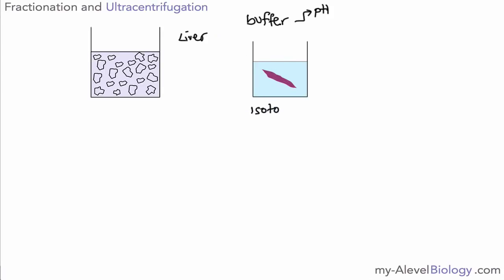But we also need to make sure that this is isotonic. Isotonic actually means that the concentration of the solution here is exactly the same as the contents of the cells in the tissue. That way we won't have water moving in by osmosis or water moving out by osmosis because that could either cause the organelles to shrink or it could cause the organelles to actually burst and become destroyed.